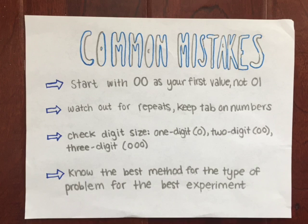Here are some common mistakes to watch out for when answering these types of problems. When using Table D to randomly assign, start with 00 as your first value, not 01. In addition, watch out for repeats. With large sample sizes, it might get difficult to remember all the numbers previously selected, so keep a neat list of the numbers and check it frequently when sampling. Also, check for digit size — check to see if you have one-digit, two-digit, or three-digit labels. And most importantly, know the best method for the type of problem. Try to see if you need a simple random sample, stratified random sample, or cluster sample so that you can have the best experiment with the least amount of bias.